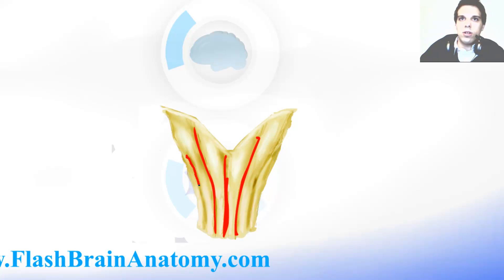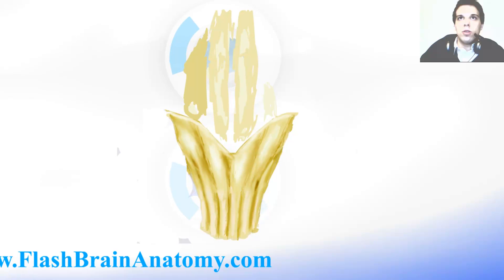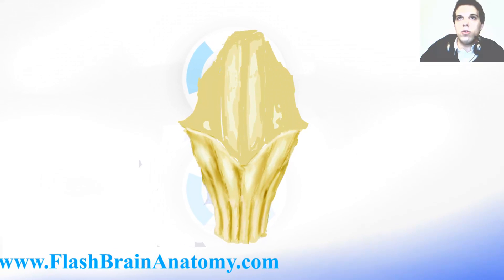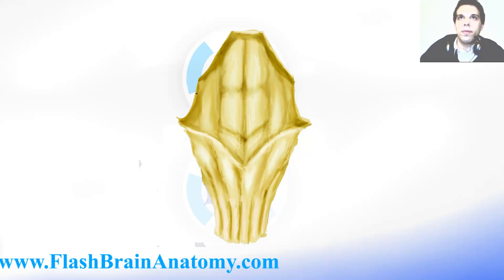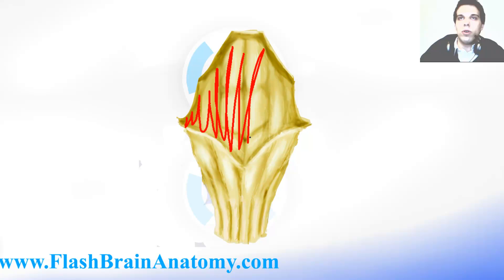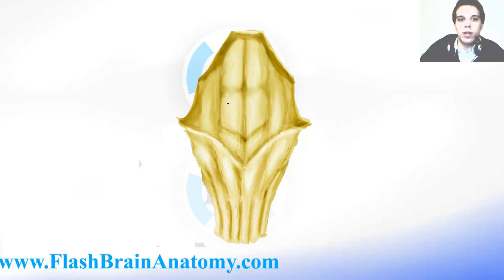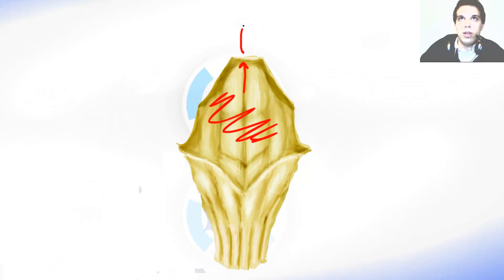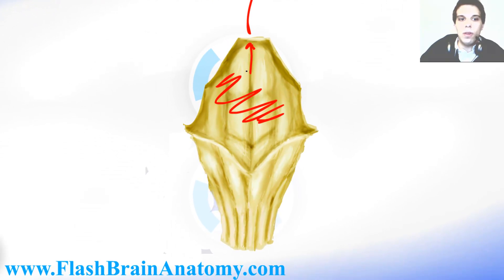And at last we have the sulcus over here which is called the posterolateral sulcus. Now if we go further we will see the rhomboid fossa, or better called the fourth ventricle. This place over here is the fourth ventricle — it is filled with cerebrospinal fluid. If we go inside we would be able to find the cerebral aqueduct, a kind of tunnel or canal that connects this fourth ventricle with the other ventricles up in the brain. Down there the fourth ventricle turns into a central canal inside the spinal cord.